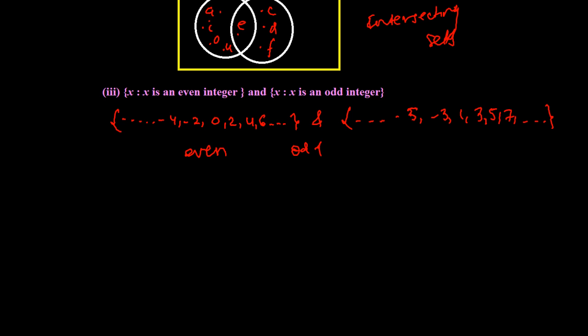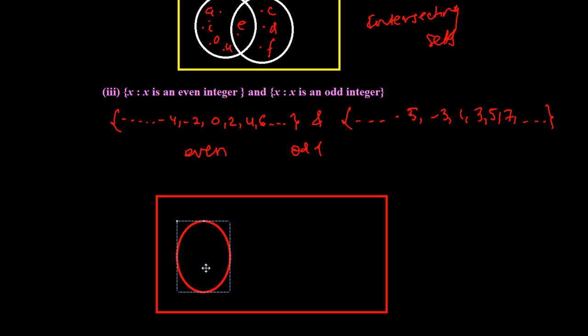And if you make the Venn diagram of this, it will be something like this, like this. And this will be your even integer and this will be your odd integer.